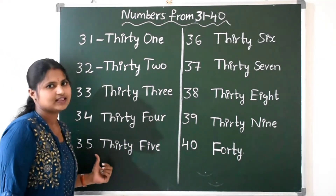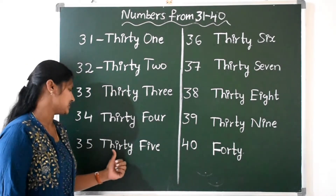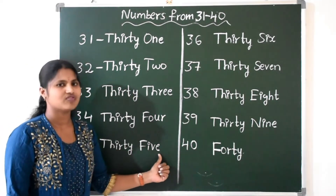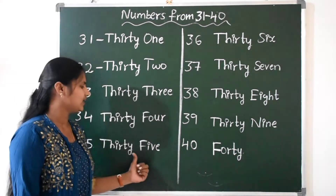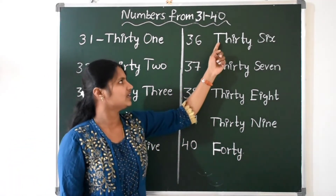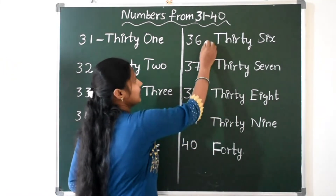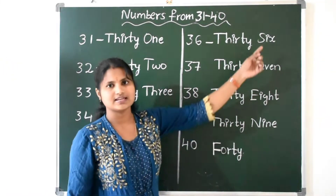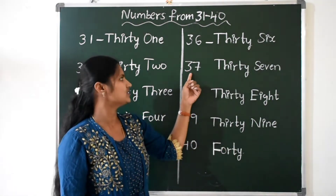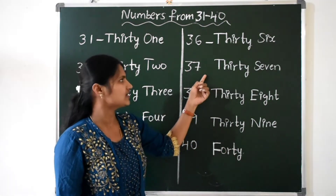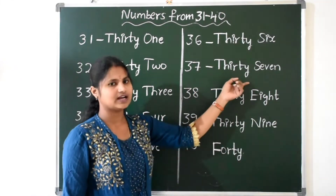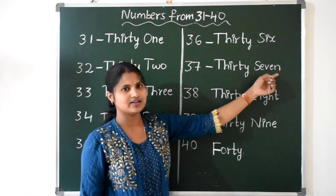Next, 35. T-H-I-R-T-Y, THIRTY, F-I-V-E, 5. 35. Next, 36. T-H-I-R-T-Y, THIRTY, S-I-X, 6. 36. Next number — tell me. Yes! 37. T-H-I-R-T-Y, THIRTY, S-E-V-E-N, 7. 37.